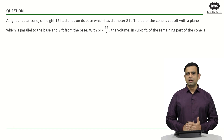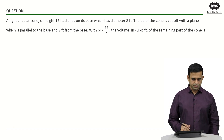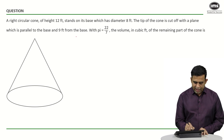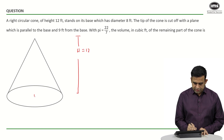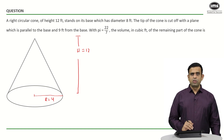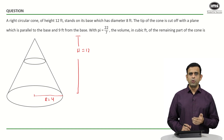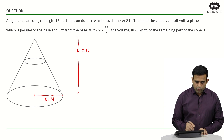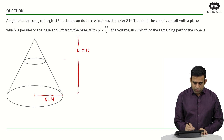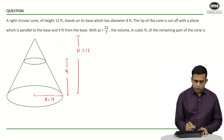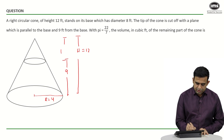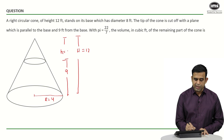Let us look at the diagram. We have a cone with height 12 and radius 4 feet. We are cutting it with a plane parallel to the base, giving us two parts: the upper part is a smaller cone and the lower part is a frustum. The cut is made at 9 feet from the base, which means the height of the smaller cone is 12 minus 9, or 3 feet.